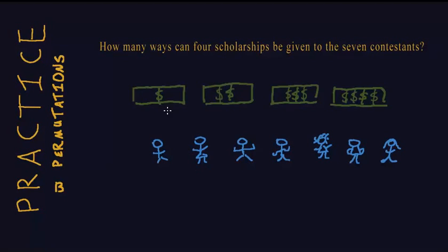So to solve this problem, let's first call these scholarships scholarship 1, 2, 3, 4. How many ways can someone get scholarship 1? Well, there are seven people.